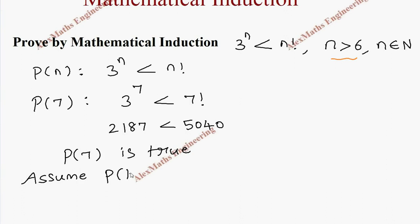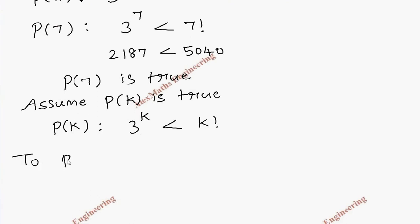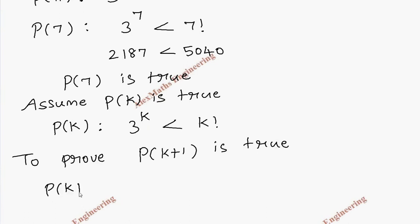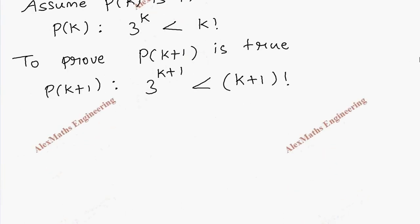Now we assume P of k is true. The P of k expression is: 3 power k is less than k factorial. Now we need to prove P of k plus 1, which is: 3 power k plus 1 is less than k plus 1 factorial.